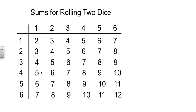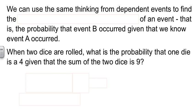We can use this to figure out problems like the one we're working on. When two dice are rolled, what's the probability that one of them is a four, given that the sum is nine?